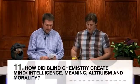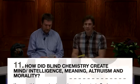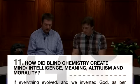Welcome to Genesis Unleashed. On this program we're doing the next question in the Question Evolution series. We are on Question 11, moving right along. Here's the question: How did blind chemistry create mind, intelligence, meaning, altruism, and morality?